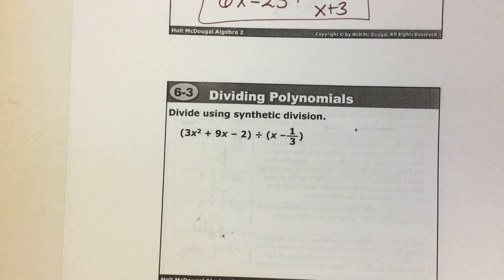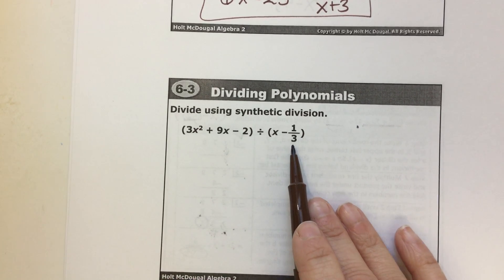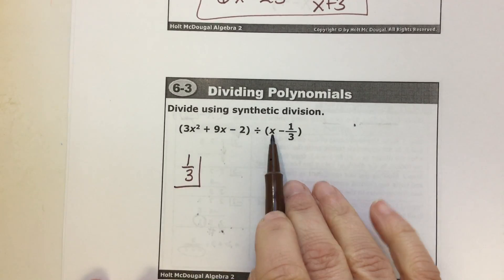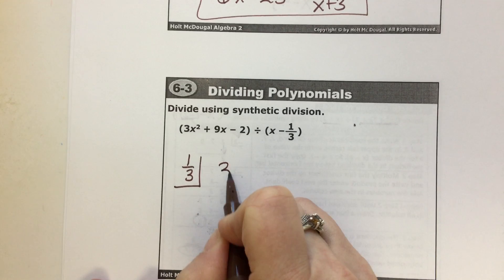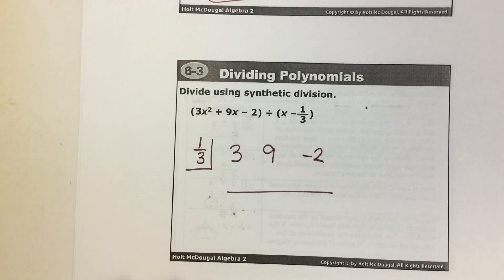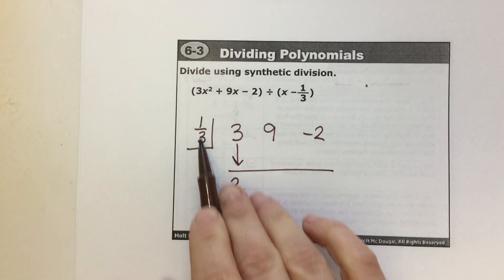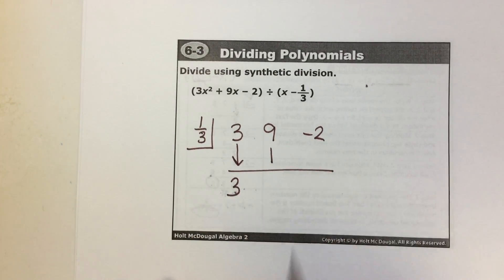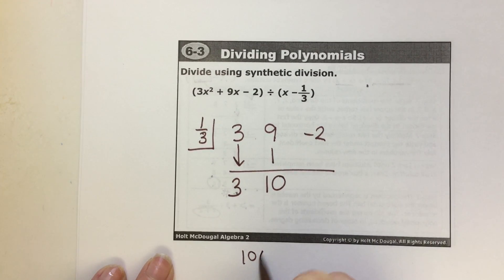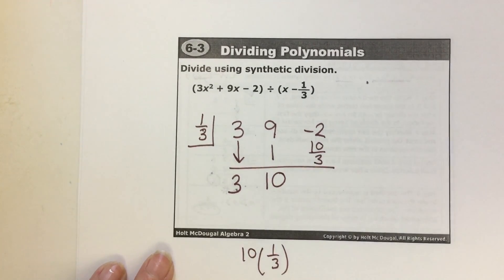Let's do another one. It is possible that the number in the box is going to be a fraction, and you can totally do this. So 1 third goes in the box because that's what you're subtracting from x. The polynomial is 3x², 9x, and negative 2 — I did not have to add any zeros. Drop down the 3. 1 third of 3 is 1. 9 plus 1 is 10. 10 times 1 third is 10 thirds — which is totally fine.